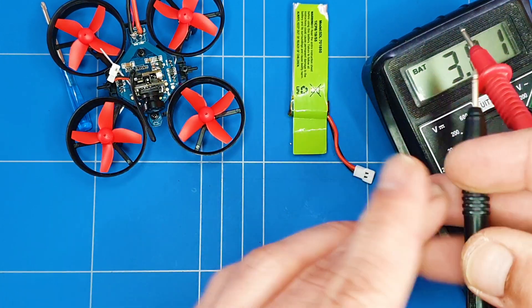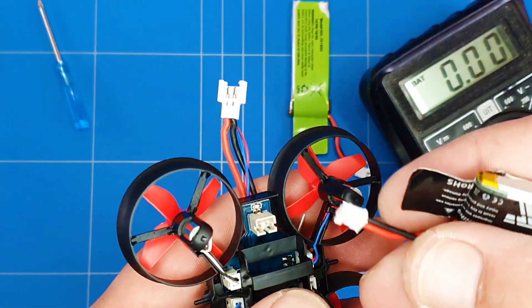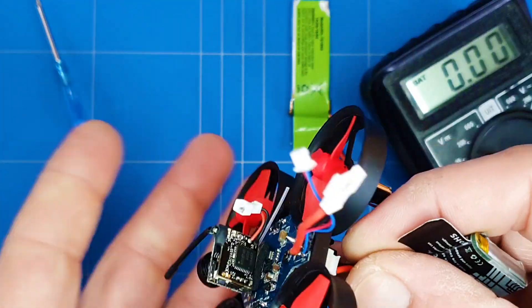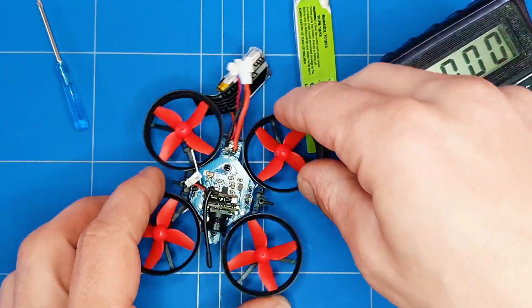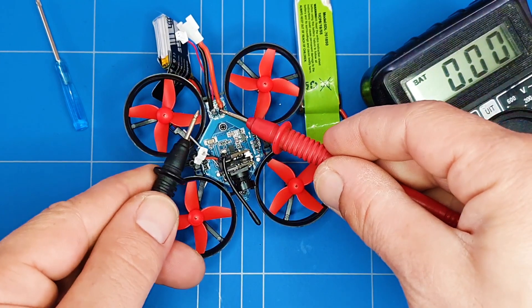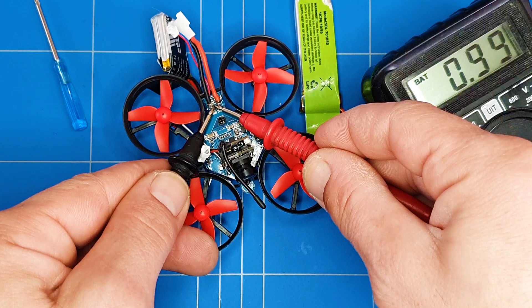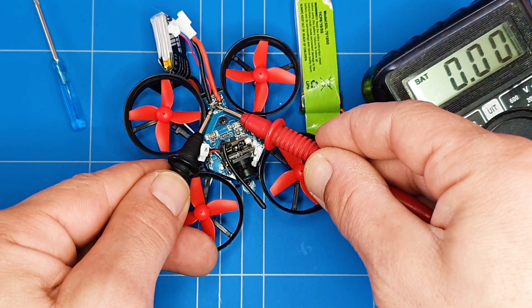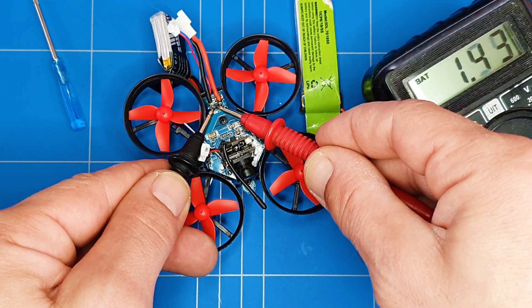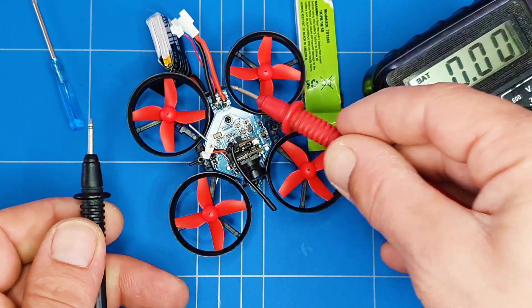So I'll show that. If you connect the battery to the drone, I got a little spark there. And you measure left and right, you can see left is negative and right is positive.